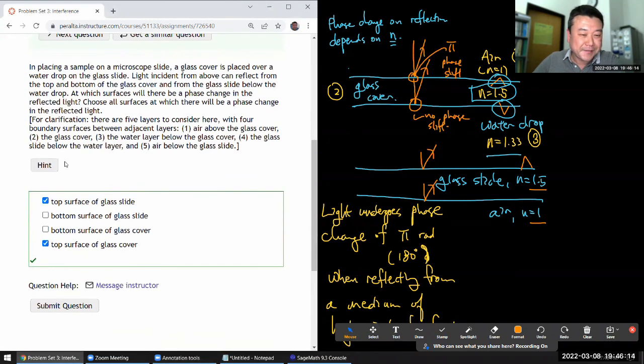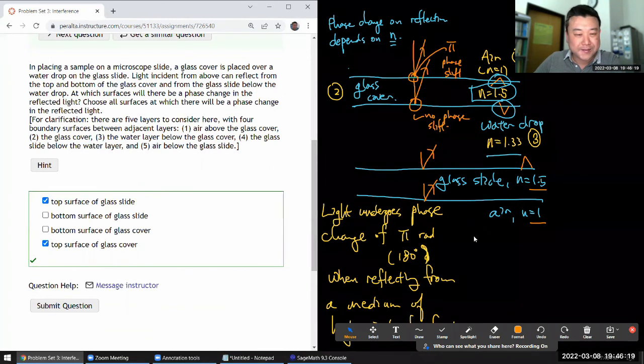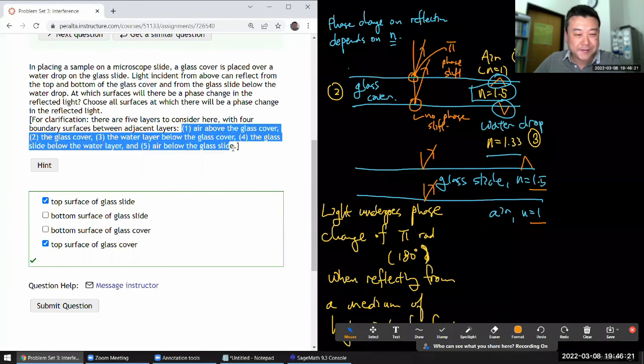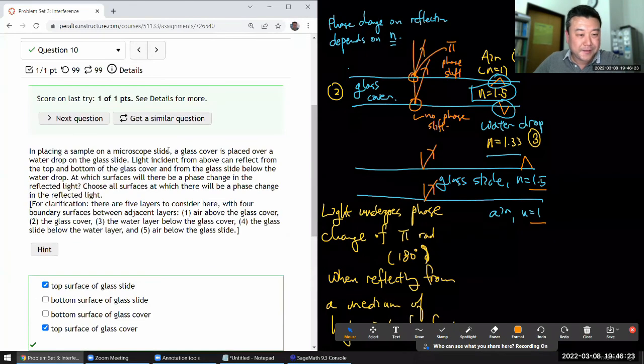Yeah. It's, yeah. There are five layers listed here. Air, glass cover, water, glass slide, and air below. Yeah. Yeah. Almost forgot about that. Yeah.